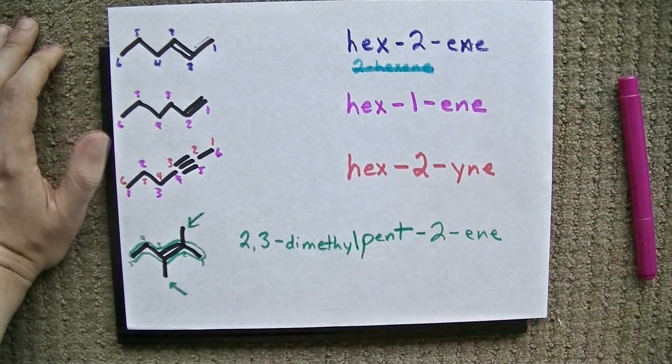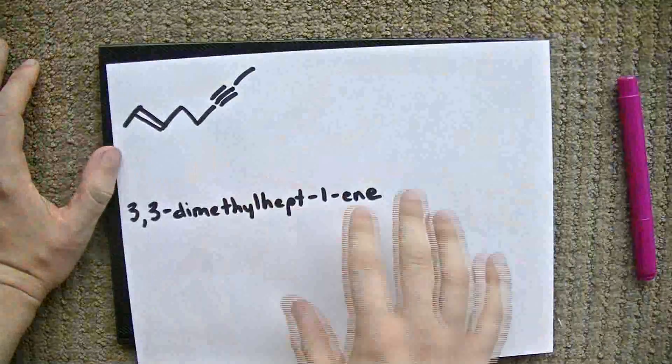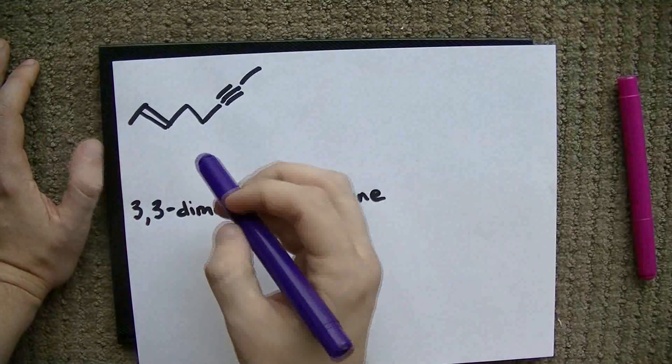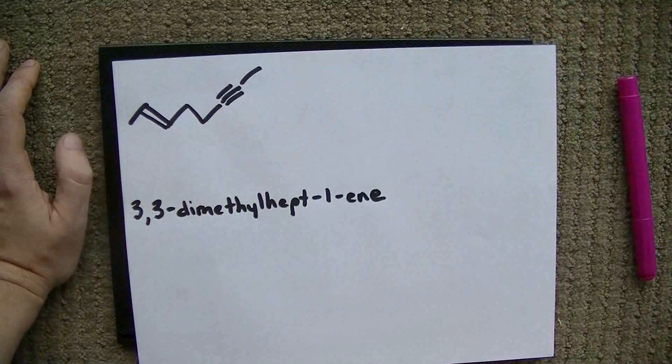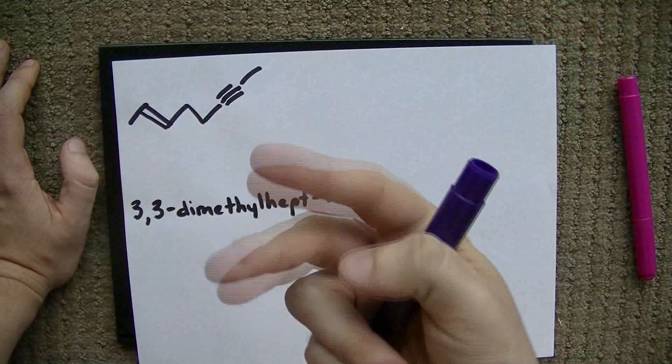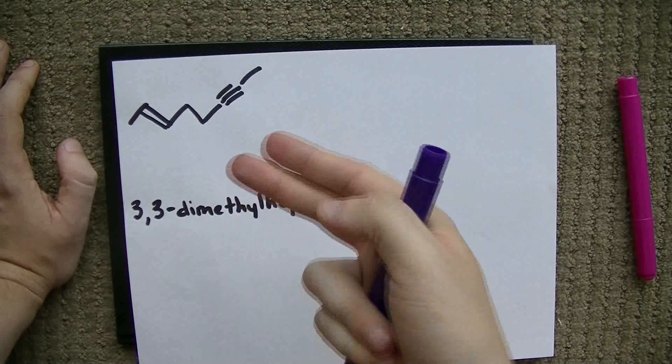Pretty cool. Good job naming that with me, guys. Now, for you advanced folks, you may see a molecule that has a double bond and a triple bond. What we do is we include both suffixes. Here's what I mean.